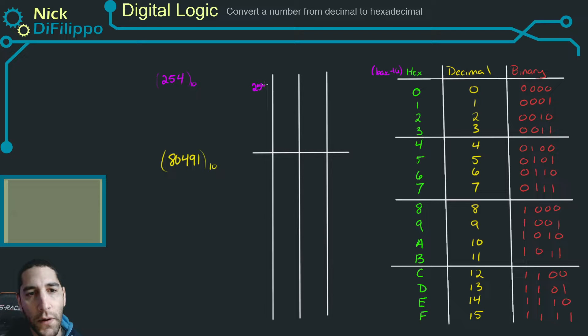254, and I want to divide it by 16. I want to divide it by 16 because hexadecimal is base 16. So that's where that 16 comes from.